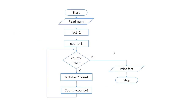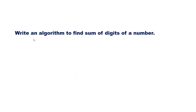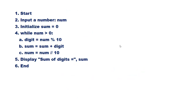Next question: draw a flowchart to find the factorial of a number. Start. Read number. Set fact equal to 1, count equal to 1. While count is less than or equal to num: fact equal to fact multiplied by count, count equal to count plus 1. This is a loop. Print fact and stop.